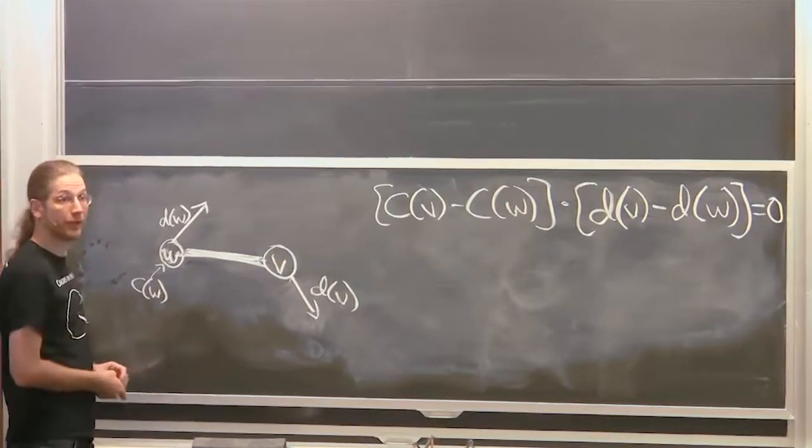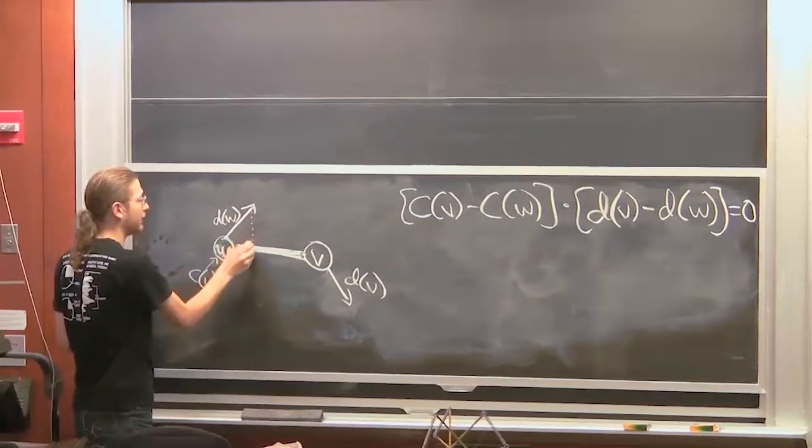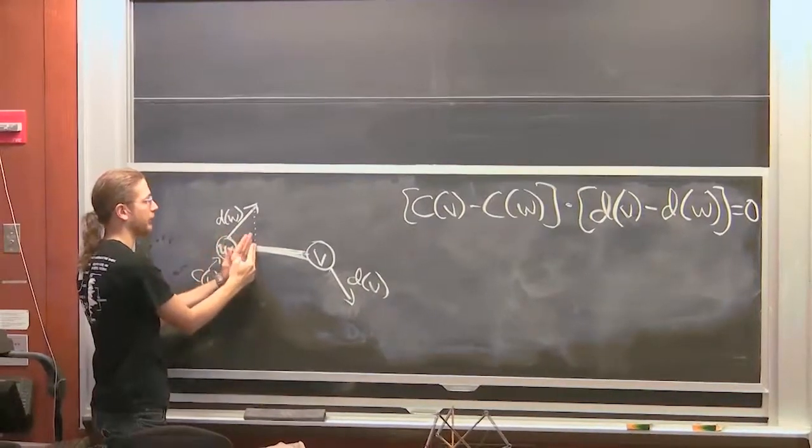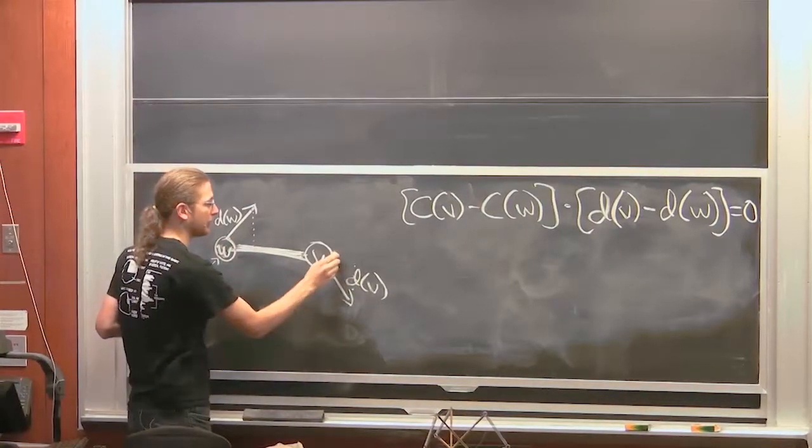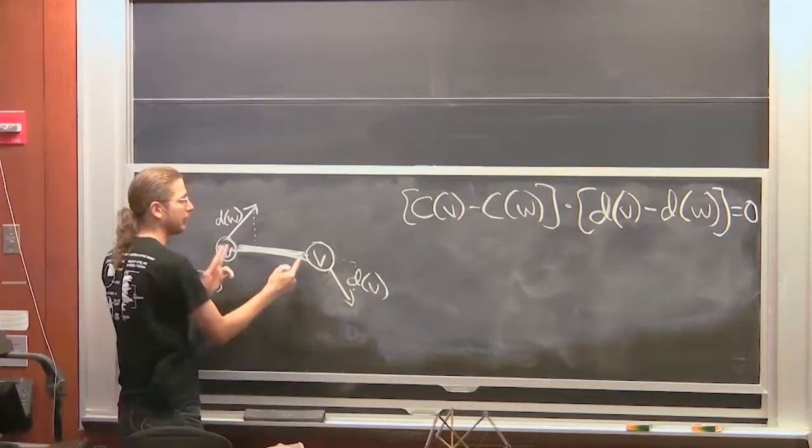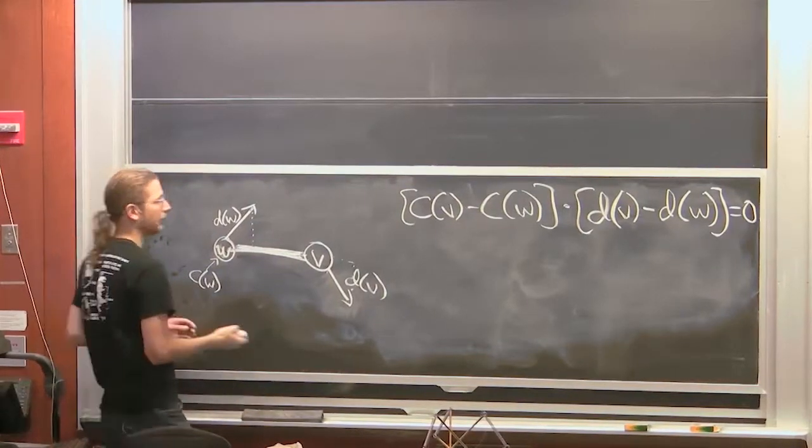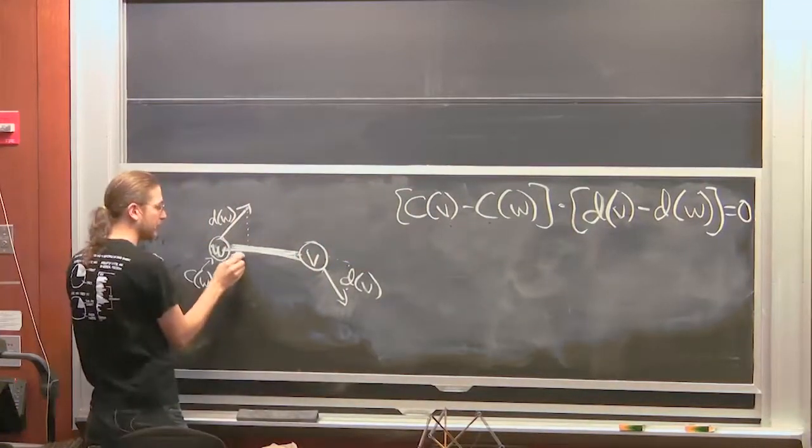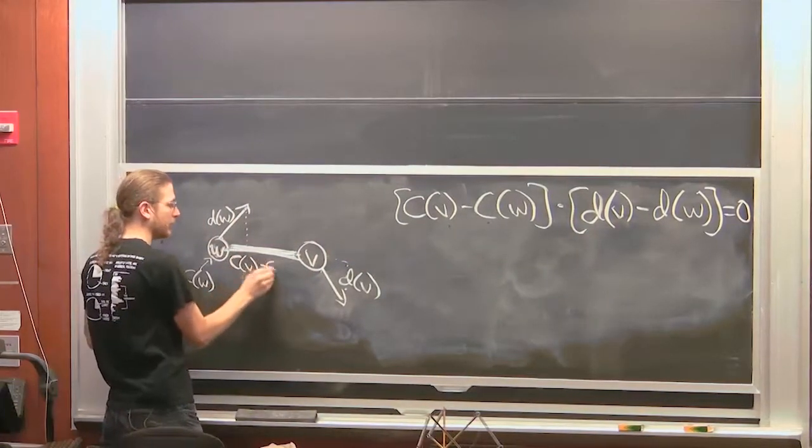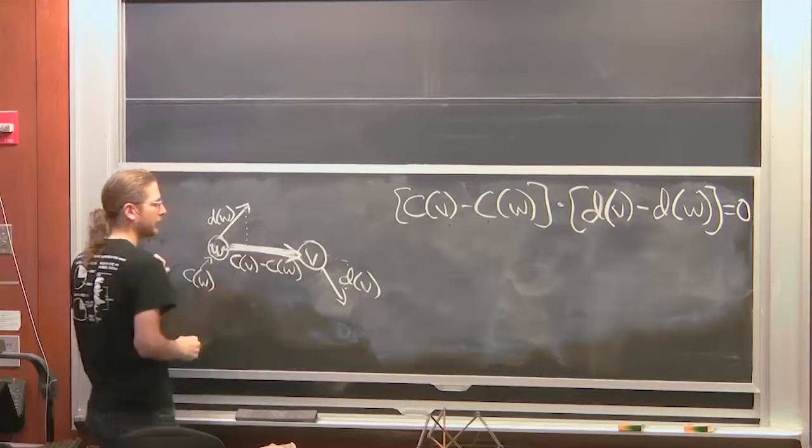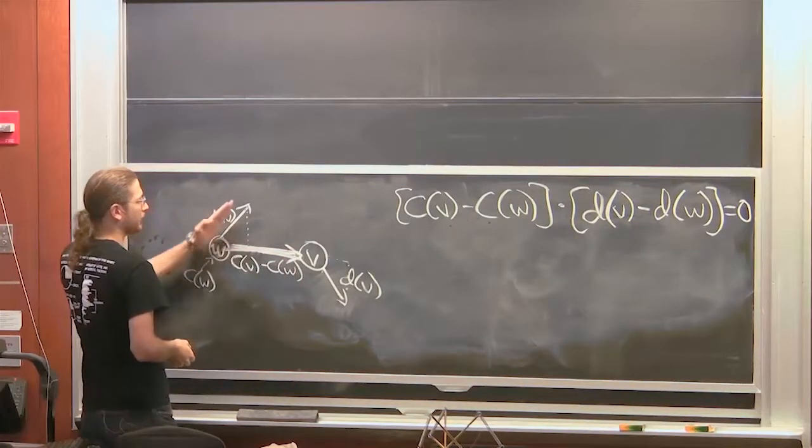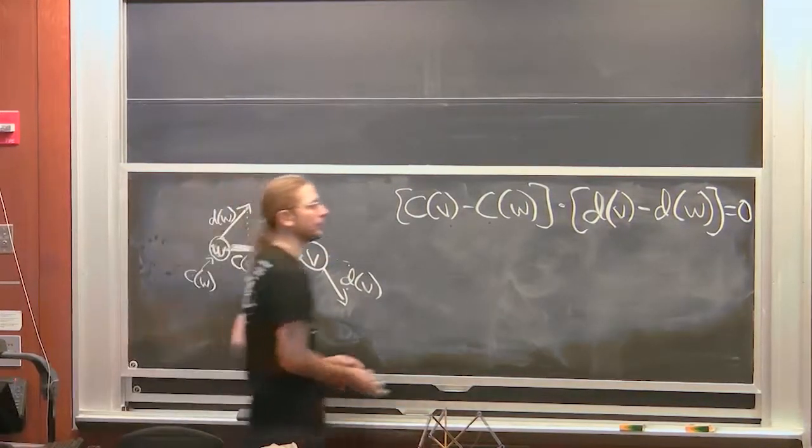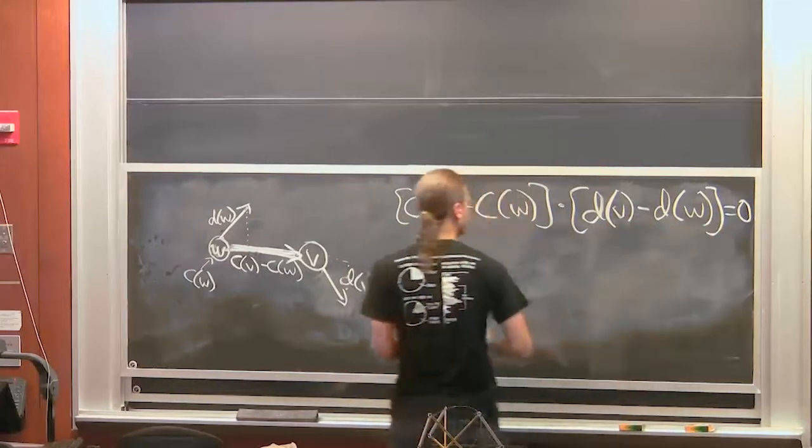So the way we said in class this works is if you look at the projected length of this vector onto the segment, that's essentially how much shorter, in this case it gets shorter. In this case, this is how much longer the segment gets to the first order. And that corresponds to d of v dot product with this vector. Because this vector, c of v minus c of w is this direction here. So if you take the dot product with this vector, you get that projected length. You want those two dot products to be equal, and so you want the difference to be 0. That's one way to think about it.